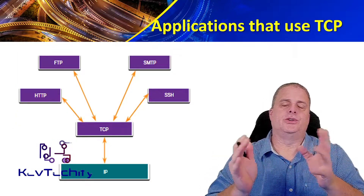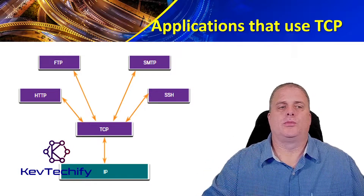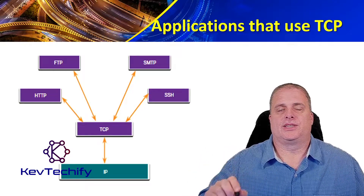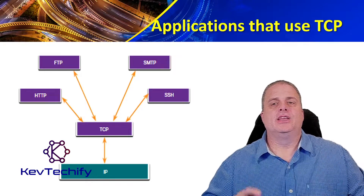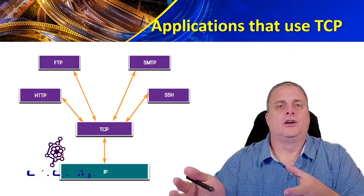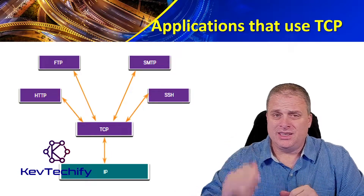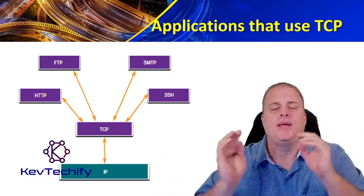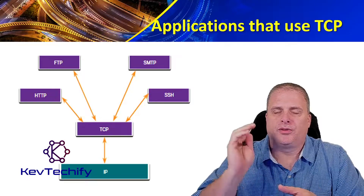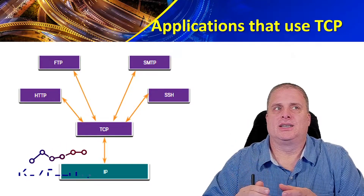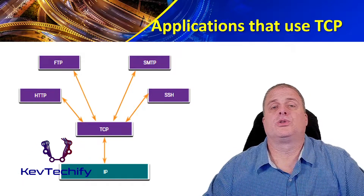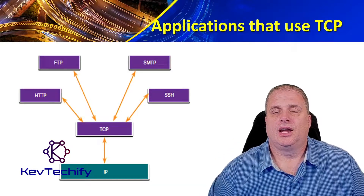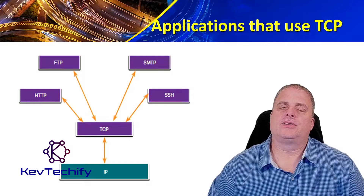Here are several applications that use TCP. We have HTTP — that's our web traffic. We have FTP, which is file transfer protocol. SMTP, the mail protocol. And SSH, which is the encrypted telnet. These all use TCP to get their data from the source to the destination. TCP divides the data stream into segments — it takes that big message and makes it into smaller segments. It provides reliability, making sure that data gets there. It also controls the flow so that the source can receive data at a rate which it can handle. And finally, it reorders the data in case it arrives out of sequence.